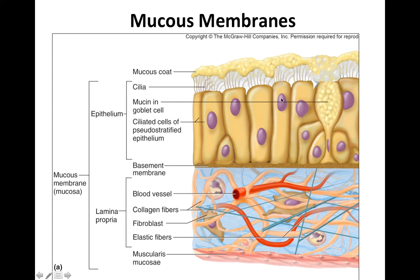Here is your epithelium, with the basement membrane right under it. Deep to that, you have your lamina propria. Lamina propria is just a term for the connective tissue associated with epithelium in mucous membranes — specifically, it is the areolar connective tissue in mucous membranes.